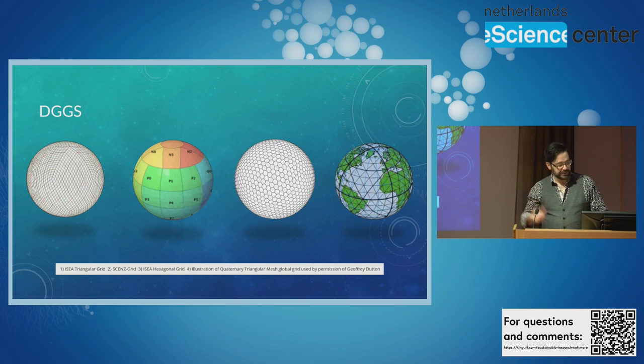So what is a DGGS? Like I said, you take the round Earth and you tessellate it somehow, break it up into pieces. People love hexagons, I love hexagons. The problem with hexagons is you cannot tessellate a sphere with hexagons, at least not universally. You have to include a few pentagons.